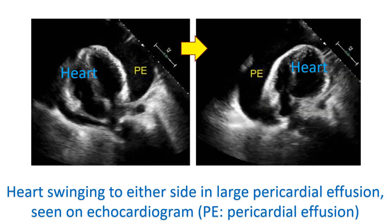Pericardial effusion is usually confirmed by an echocardiogram — an ultrasound study of the heart. In case of cardiac tamponade, the heart can be seen swinging within the large amount of fluid in the pericardial cavity. In addition, when the ventricles relax after contraction, the right-sided chambers can be seen to be collapsing, preventing proper filling of the heart.